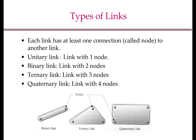Now what are the different types of links? Links can be classified based on the number of connections or nodes. A unitary link is a link with one node, a binary link is a link with two nodes, a ternary link is a link with three nodes, and a quaternary link is a link with four nodes. Since we'll be dealing with closed loop mechanisms in this class, we will be dealing with binary, ternary, and quaternary links. These holes in the example pictures basically show the nodes.